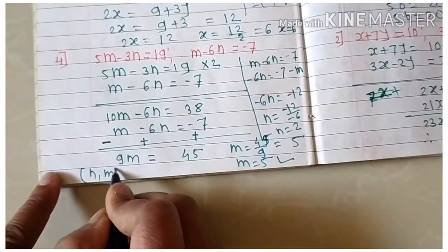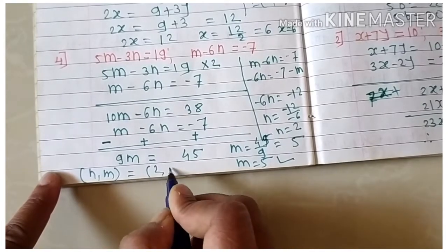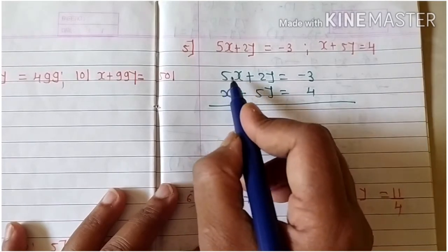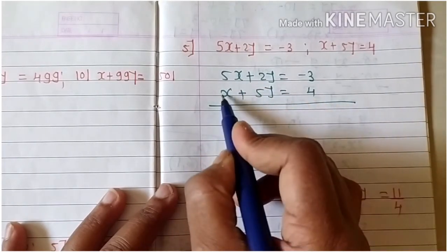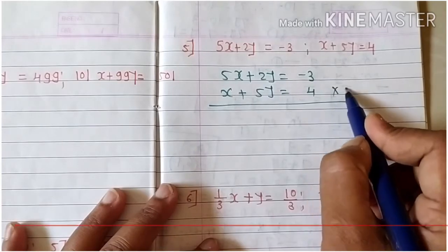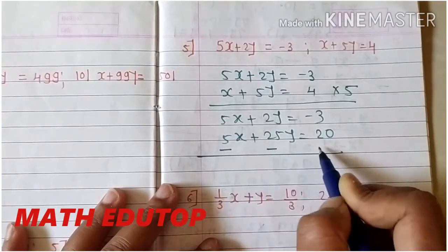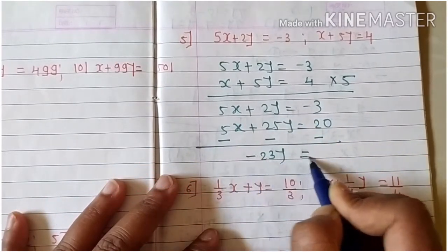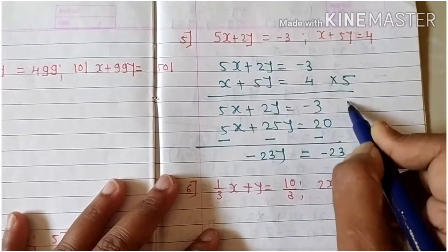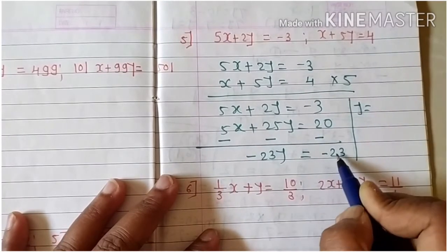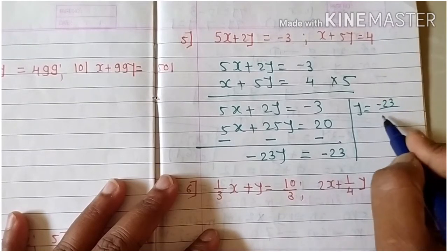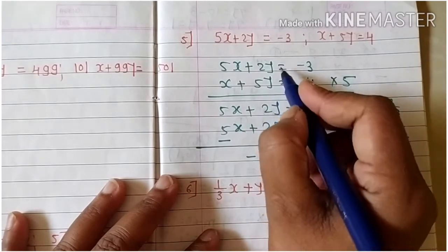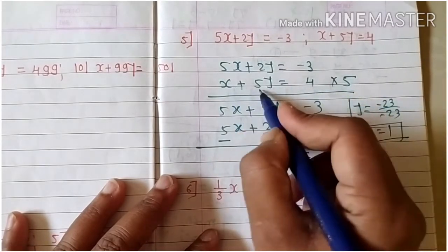To make the coefficient of x the same, multiply the second equation by 5 to get 5x. Taking subtraction: minus minus gives plus, and the x terms cancel. We get 23y minus 10 equals minus 23, so minus 23 divided by minus 23 gives y equals 1.